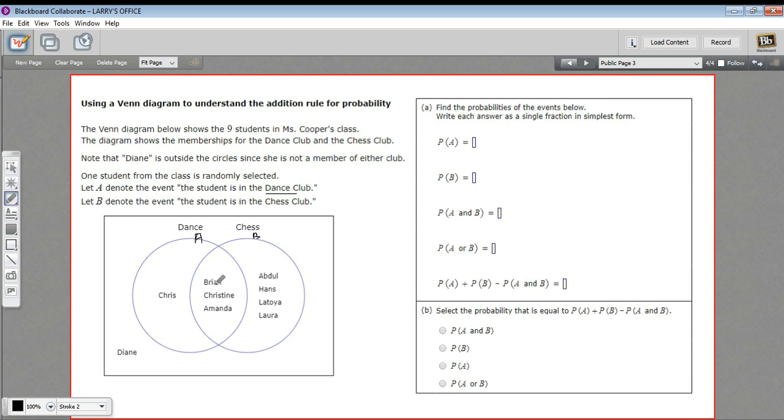So the probability of A, to determine the probability of A, we just count the number of students in the dance club. That's four, these four, and then divide by the total number of students. The total number is nine, including Diane. So this is four ninths. And they want these in fractions in simplest form, four ninths would do that.